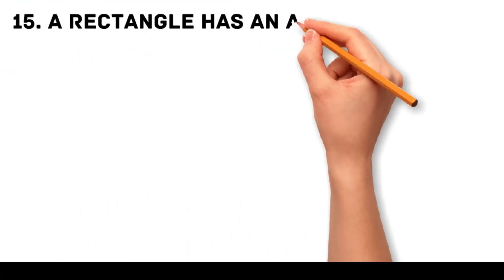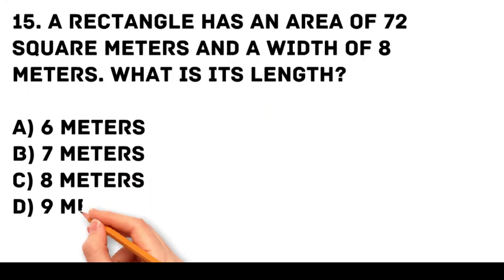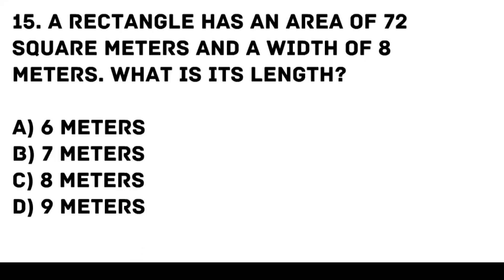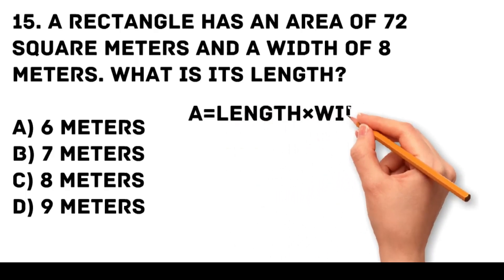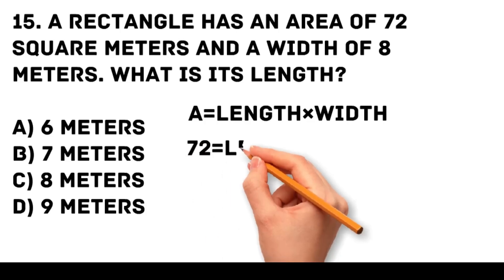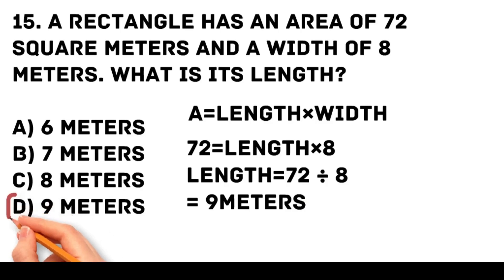Question 15. A rectangle has an area of 72 square meters and a width of 8 meters. What is its length? A. 6 meters. B. 7 meters. C. 8 meters. D. 9 meters. Area of a rectangle is length times width. 72 equals length times 8. Length equals 72 divided by 8, equal to 9 meters.